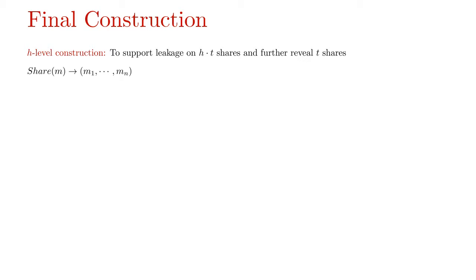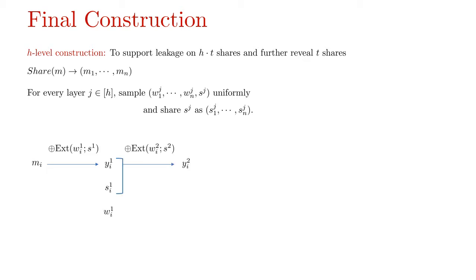Firstly, the secret M is N T shared into shares M1 through MN. Then, for every layer J from 1 through H, we sample the sources W1J through WNJ and the seed SJ uniformly. Further, each seed is secret shared to generate each party's share. The share MI is masked with an extractor output to get Y1I which is then appended with the seed share S1I and the source W1I to form the first level share. Here, Y1I and S1I are together then masked with a fresh extractor output to get Y2I which is then appended with the seed share S2I and the sources used up to this level which are W2I and W1I. All these together form the second level share and this process continues up to H levels to derive the final share I.